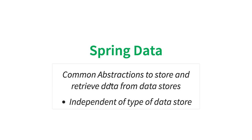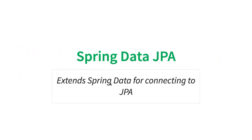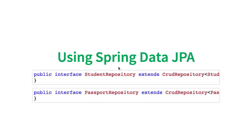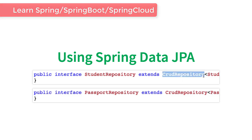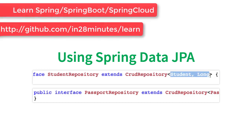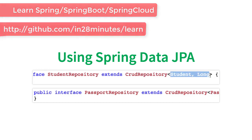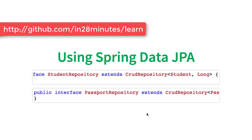Spring Data says: why do I need to connect to different data stores in different ways? Why do I need to worry whether I am connecting to a JPA data store, or Hadoop, or Cassandra, or MongoDB? Why not create common abstractions that help us connect and switch between these data stores? Spring Data is independent of the type of data store you are connecting to. Spring Data JPA is nothing but an extension of Spring Data to connect to JPA, to relational databases, to use Hibernate. When you use Spring Data JPA, all you need to do is declare that Student Repository extends a CRUD repository.